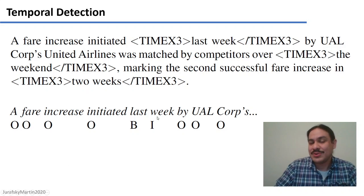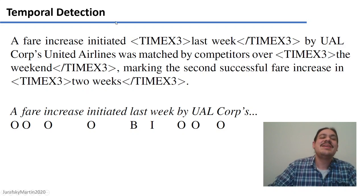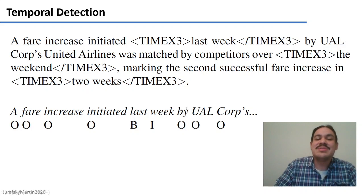Here, we have our good old IOB notation. In this sentence, a fare increase initiated last week, the word last is the beginning of a temporal word, week is the intermediate part of a temporal expression, and O is outside of a temporal expression.